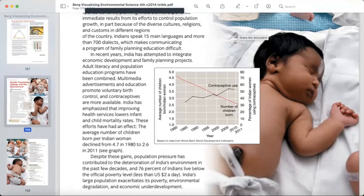The average number of children born per Indian woman declined from 4.7 in 1980 to 2.6 in 2011.